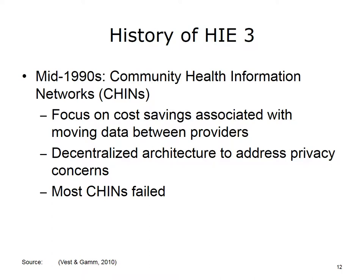By the mid-1990s, another form of HIE came onto the scene, this time referred to as Community Health Information Networks, or CHINs. Whereas the 1990 efforts were mostly collaborative endeavors by community stakeholders, CHINs were mainly commercial endeavors primarily aimed at reducing costs by sharing data. CHINs tried to overcome some of the pitfalls learned in 1990. For example, given the fierce political opposition to making community health-level data available publicly, CHINs employed decentralized data structures that made them less likely to violate privacy concerns.